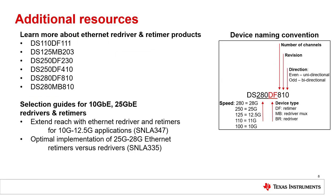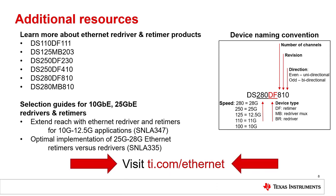Get started by using TI's additional resources to learn more. Visit TI.com/Ethernet to check out TI's Redriver and Retimer portfolio. Use selection guides for 10-Gigabit Ethernet and 25-Gigabit Ethernet redrivers and retimers to determine the right device for your needs. Download device data sheets and order samples to design a robust system with TI's Ethernet redrivers and retimers.